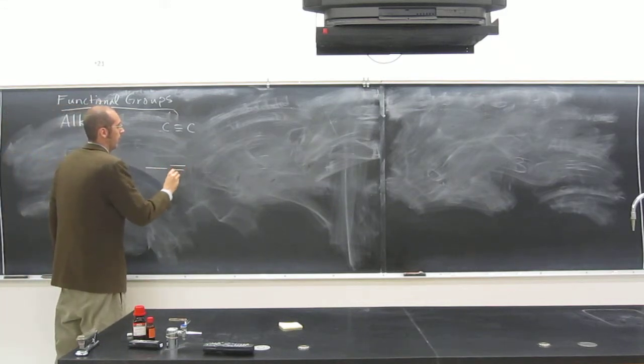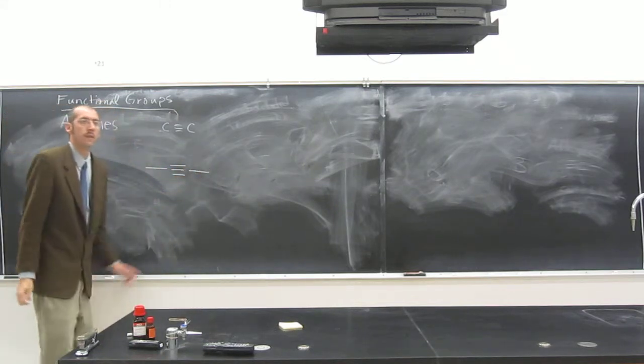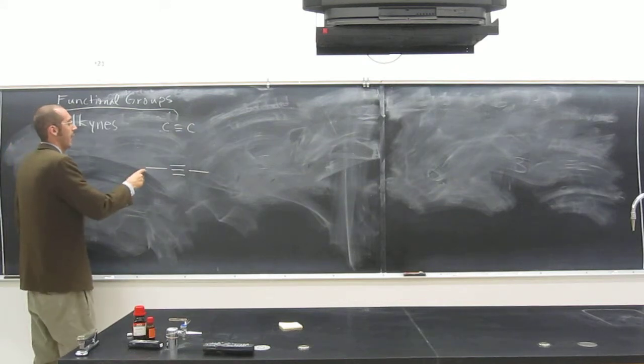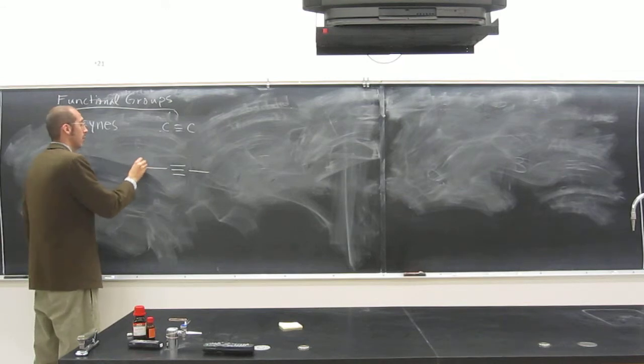So we can have a compound like this. Remember, if we have this like this, that means there's a methyl group or a CH3 group on the end. So let's draw this thing out.